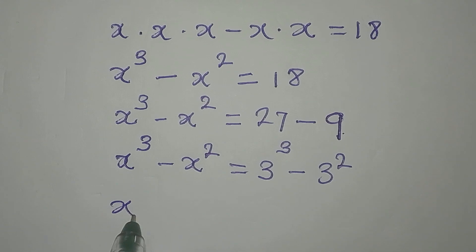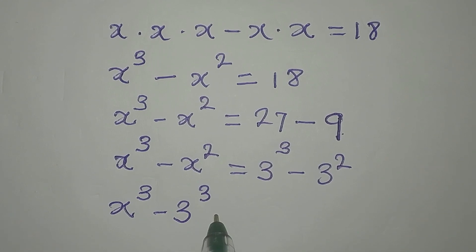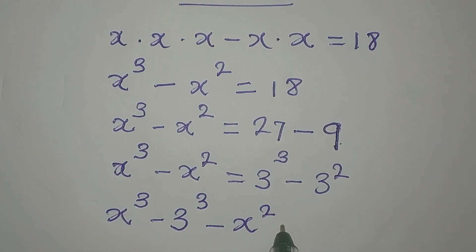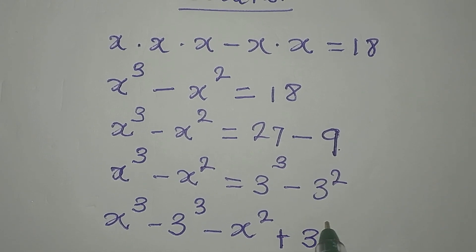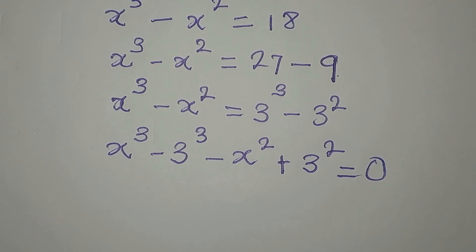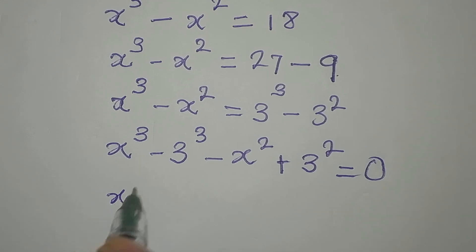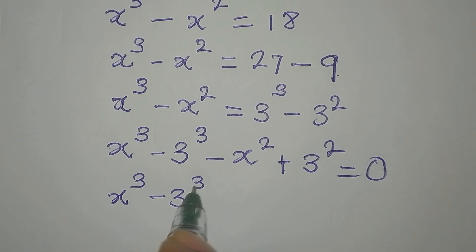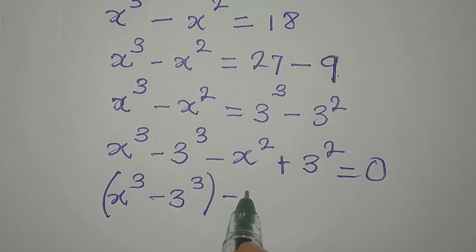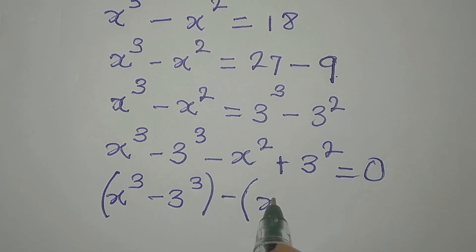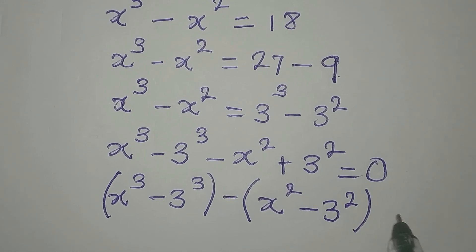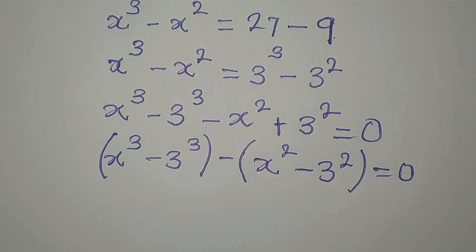Now if you look at the left hand side and the right hand side they are alike, so let's regroup. We have x³ minus 3³, then minus x² — this comes out to become plus 3². We can regroup what we have here: x³ minus 3³, then opening brackets we have x² minus 3², and this is equal to 0.